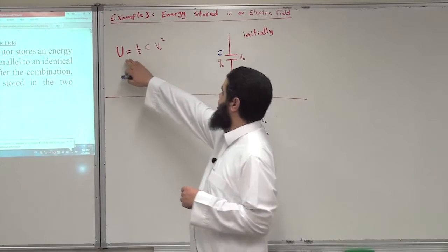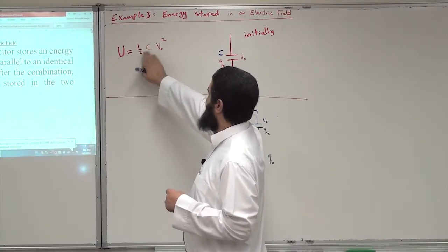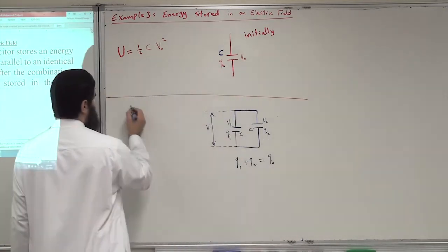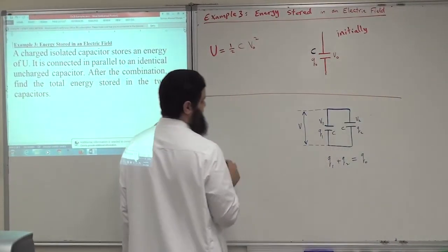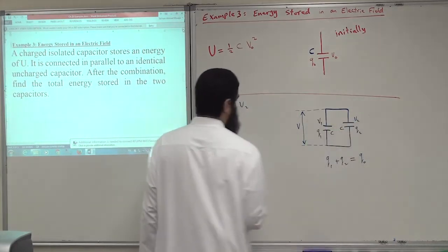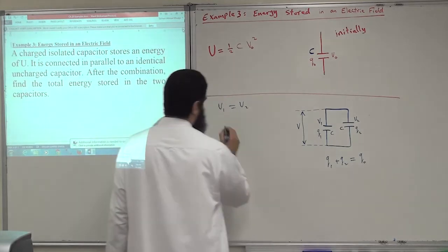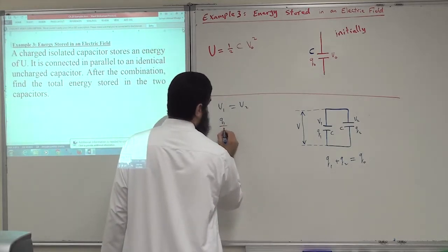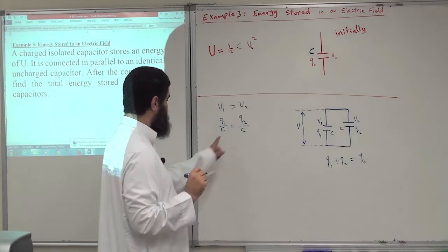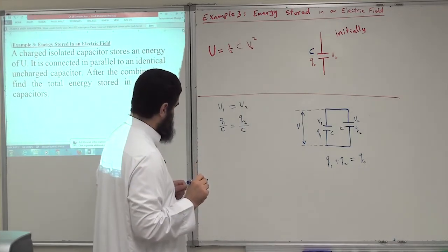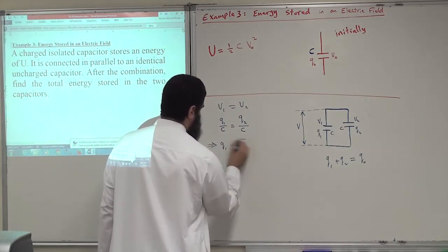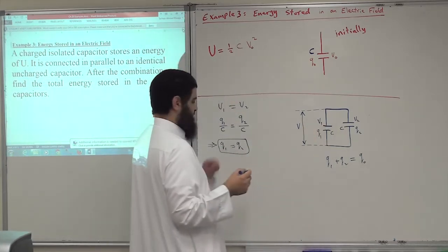Initially U equals one half C V0 squared. After parallel connection, V1 must equal V2. V1 equals Q1 over C1, which equals Q2 over C2. Since they are equivalent capacitors, this gives Q1 equals Q2.